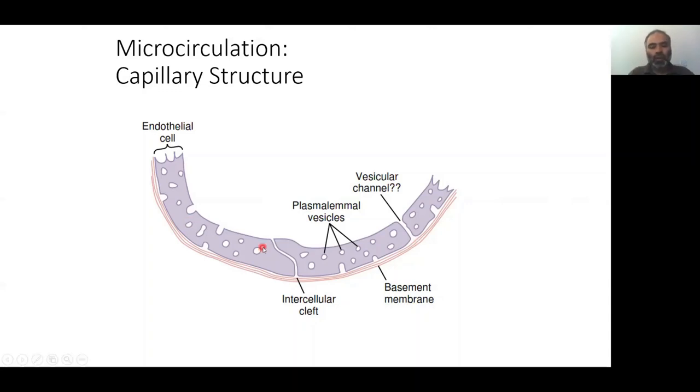For example, the brain. In the brain, you cannot have a situation where all the stuff can come from the blood and just dump it on the brain itself. So you have very tight regulation for the blood-brain barrier, where endothelial cells have very close approximation, very tight junctions amongst them.